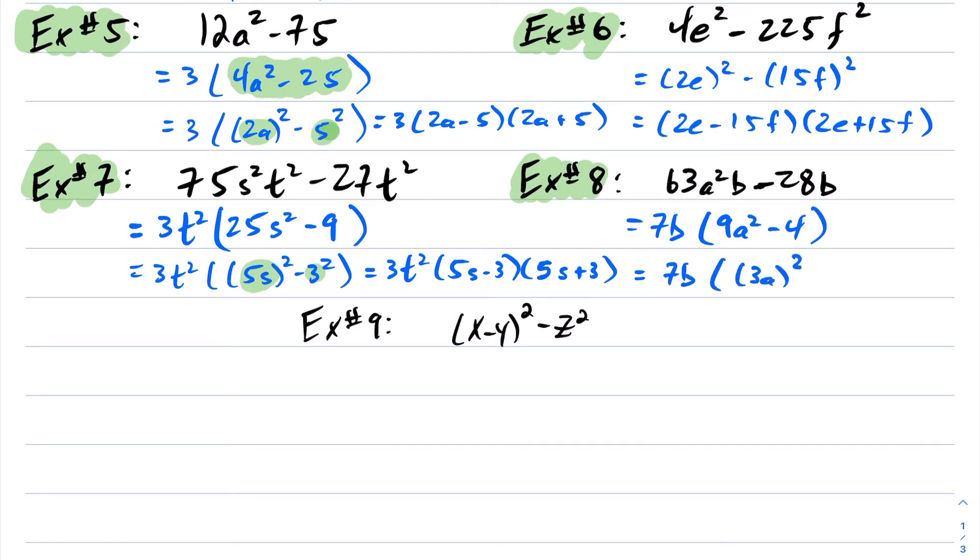So now this becomes 7b. And again, I can write this as powers of 2, powers of 2. This becomes 7b. This is my x and this is my y.